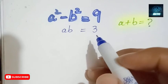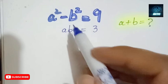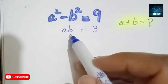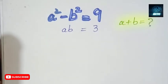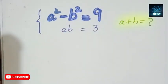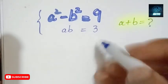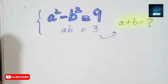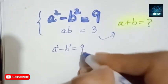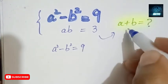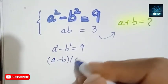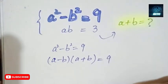Hi everyone, in this video we are going to solve a very nice algebraic equation. a² minus b² equals 9, and here it is given that ab equals 3. We have to find a plus b. This is the main equation from which we can find the value of a plus b. We know that a² minus b² can be written as (a minus b)(a plus b), which equals 9.